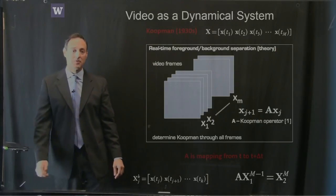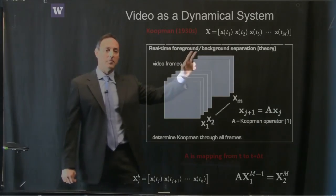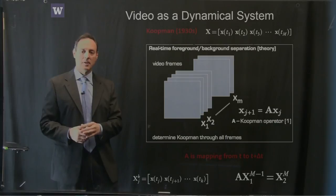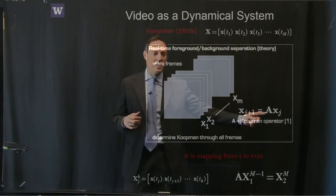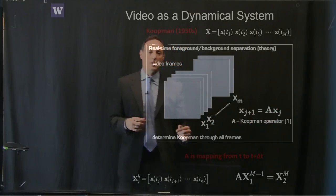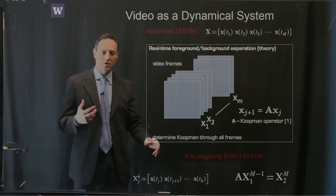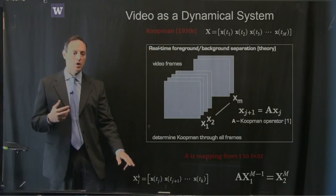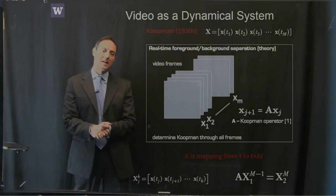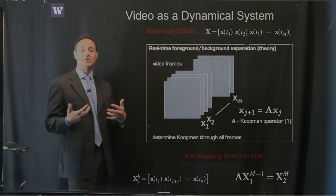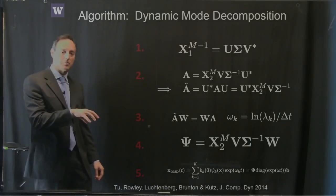We take snapshots of a video frame at certain points in time, collecting M snapshots. A camera like an iPhone might take 30 frames per second. This is the idea from Koopman in the 1930s: construct a matrix A that takes you from one frame to the next, and then to the next. Collecting all data frames from J to K, you construct the best-fit matrix A that advances all video frames one delta-T into the future — this is the DMD algorithm essentially proposed by Schmidt in 2010.